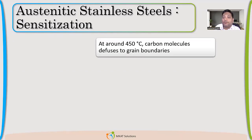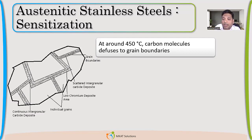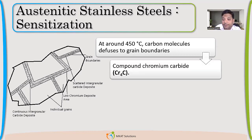At around 450 degrees Celsius, the carbon molecules present in the steel — 0.08 percent if we talk about 304 — diffuse towards the grain boundaries. After that, they form chromium carbide by reacting with the chromium present in the steel, making a compound called Cr4C.